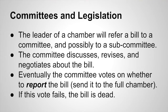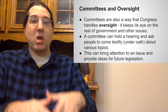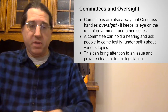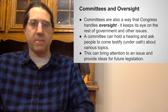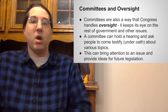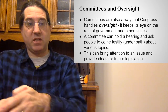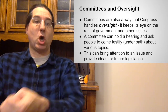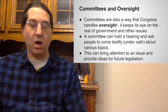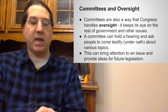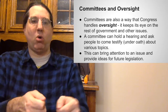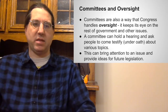Committees also have an oversight responsibility. When they're not making laws, they can be holding hearings and asking people to come in and testify about different topics — how is this law working, how bad is this problem in the United States, what would happen if we did such and such. These oversight hearings can bring attention to an issue and provide ideas for future legislation. They're also a way that the legislative branch can check and balance the executive branch by calling in executive branch officials to testify. When one party controls Congress and the other controls the White House, the oversight actions of committees are a way Congress can challenge and poke at the executive branch.